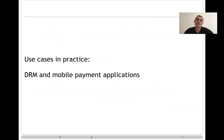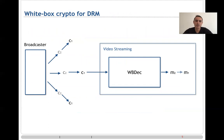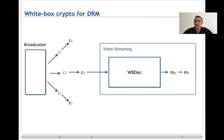Let's start by revisiting the main use cases of white-box crypto in practice: DRM and mobile payment applications. When white-box cryptography was introduced some years ago, it was introduced within the context of digital rights management applications. In DRM, a content provider or broadcaster generates some content, encrypts it, and broadcasts it. A set of subscribers who pay for the service obtain a decryption or decoder algorithm which lets them recover the information being broadcast — for example, a video streaming platform.